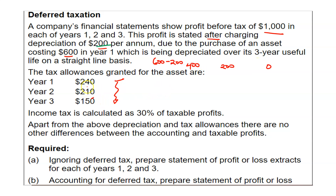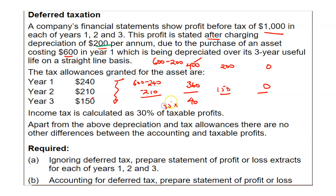Looking at the tax written down value — the tax base — it is £600 minus £240, because this was the tax allowance given. That's the tax depreciation. So my tax base in year one is £360. In year two, the tax base is £600 minus £240 minus £210, so £360 minus £210, which is £150. And in year three, it will be £0. I literally compare my carrying amount and my tax base. Carrying amount minus tax base is £40, and I multiply by 30% to calculate my deferred tax liability. 30% of £40 is £12, so my deferred tax liability in year one is £12. Debit tax expense £12, credit deferred tax liability £12.